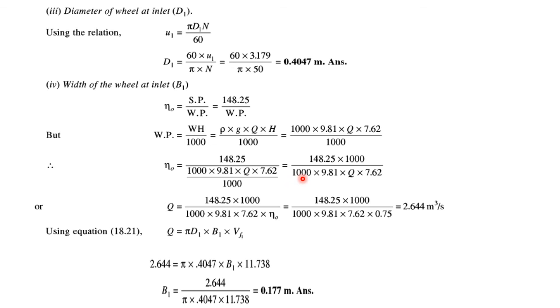Overall efficiency is given as 75%, so you can find out the value of discharge Q, that comes to 2.644 cubic meters per second. By using this relation Q = πD1·B1·Vf1, this is the formula for discharge from the turbine.